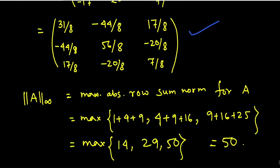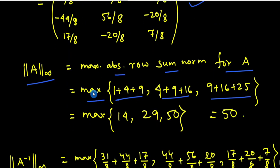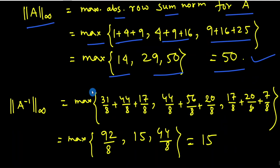We now calculate the infinity norm of A, which equals the maximum absolute row sum. This is the maximum of the first row sum, second row sum, and third row sum, giving the maximum of 14, 29, and 50. Therefore the infinity norm of A equals 50. Now we find the infinity norm of A inverse, which equals the maximum of the absolute value sums of each row.